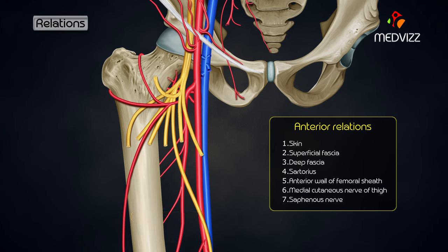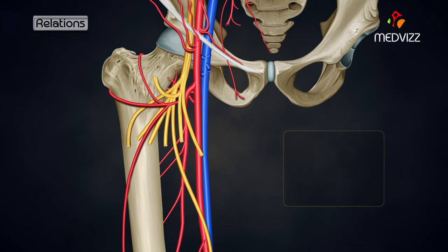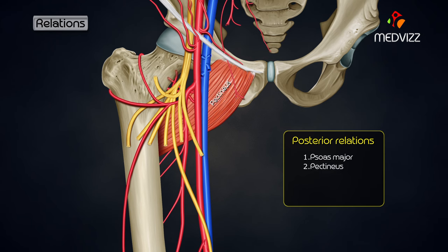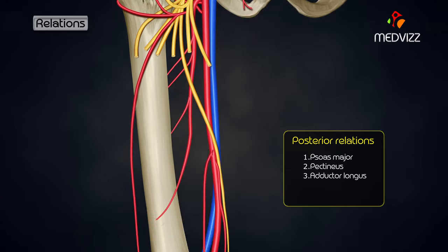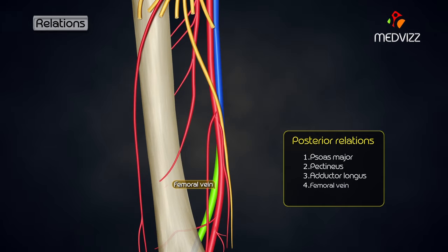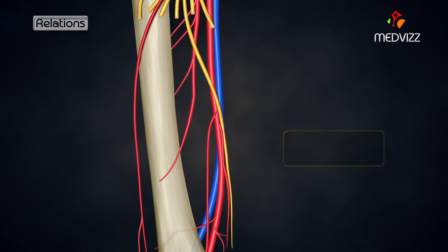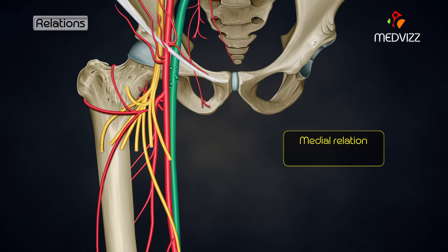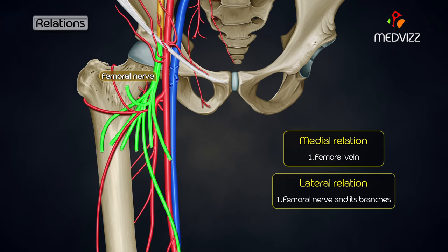When we talk about the posterior relations of the femoral artery, the structures are: psoas major, pectineus, adductor longus, the femoral vein in the lower part of its course, and the adductor magnus muscle. Medially, it is related to the femoral vein, and laterally to the femoral nerve and its branches.